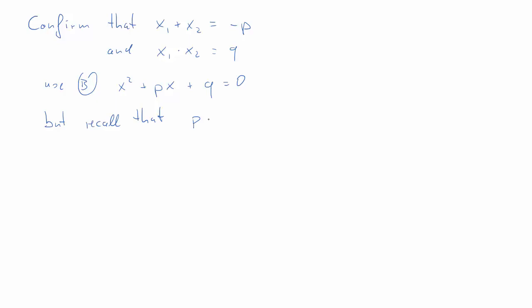But recall that the coefficients from B and those from A are related. And they're related in this way: p is equal to b over a, and q is equal to c over a.